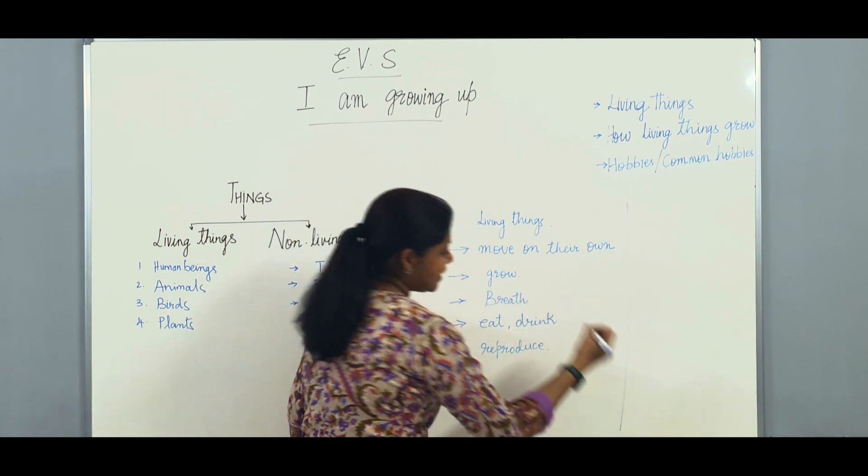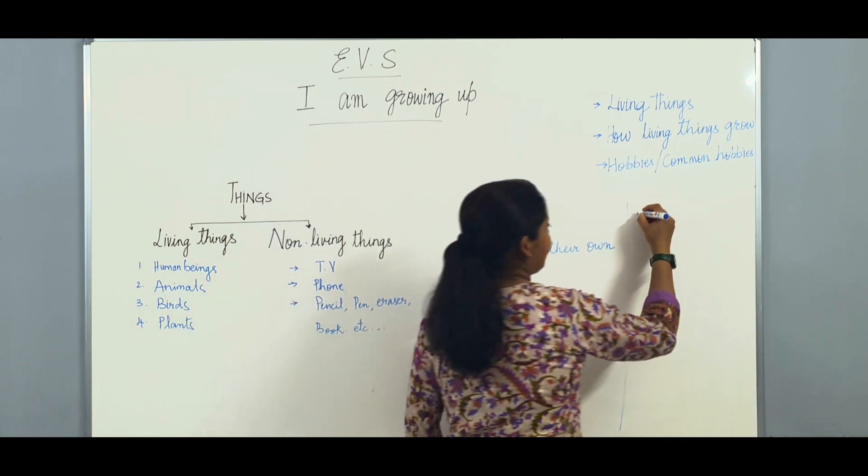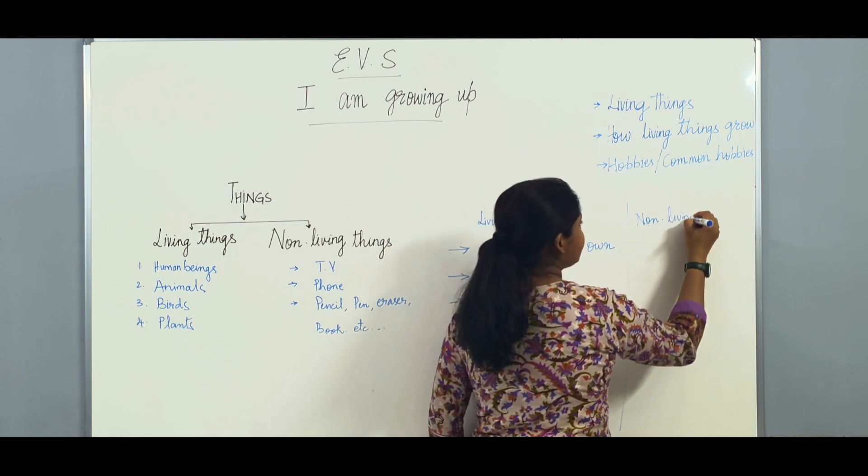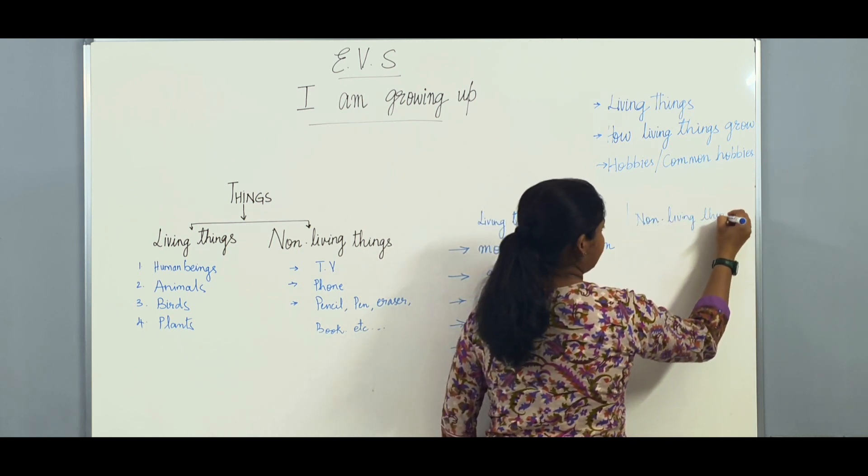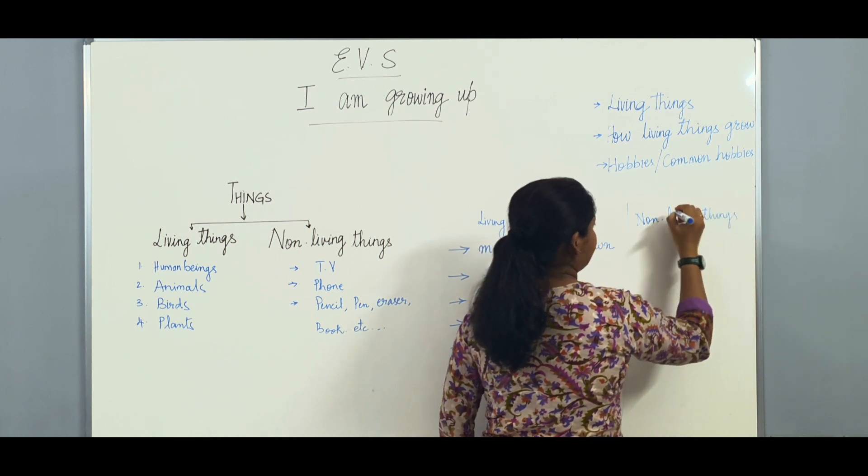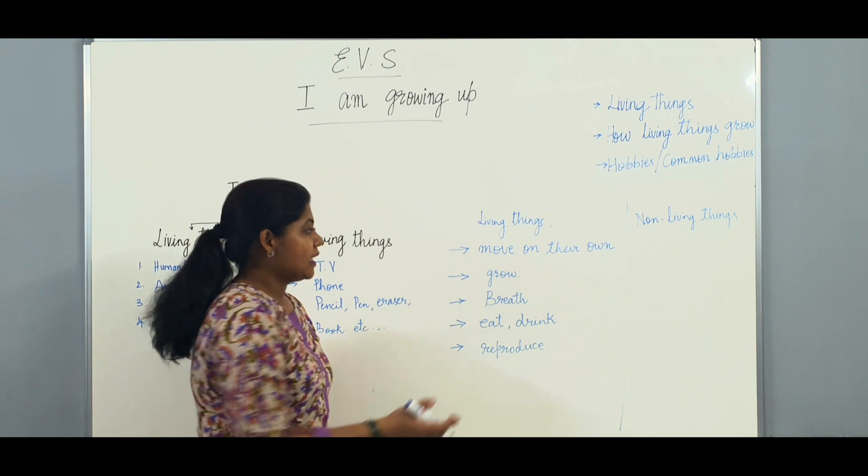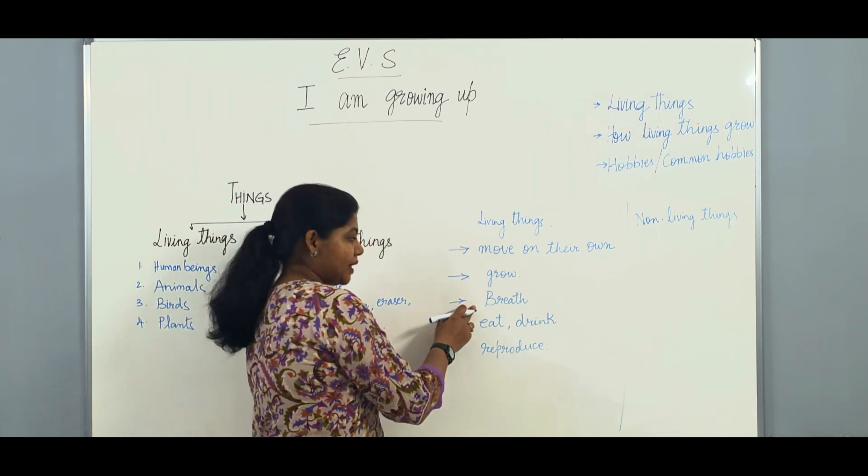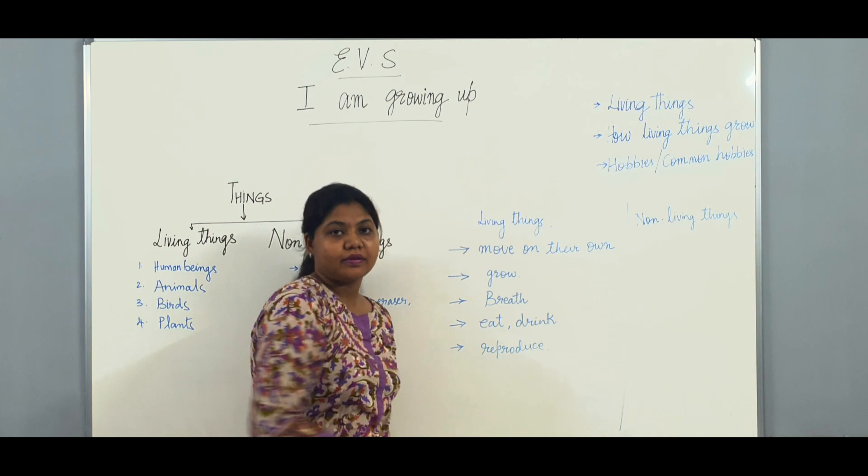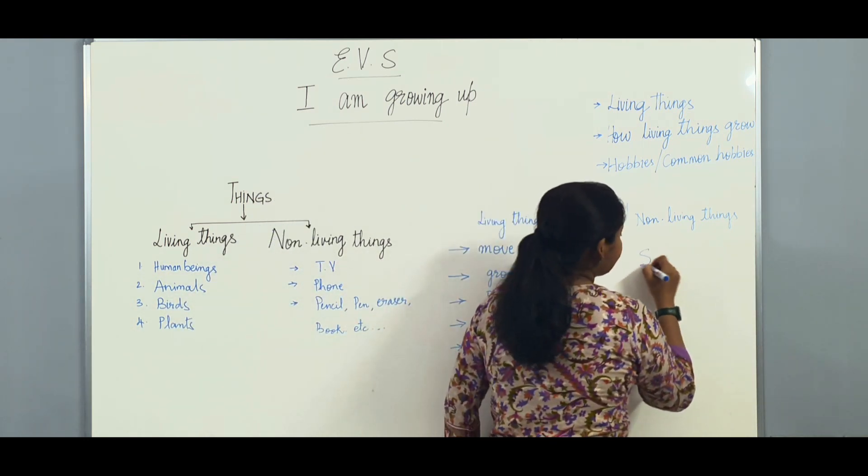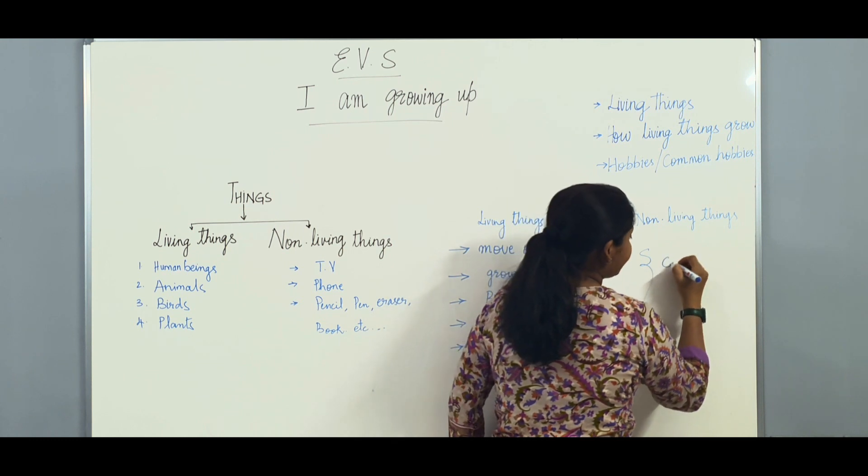And let us see non-living things. Non-living things - they do not move on their own. They cannot grow. Nor can they breathe. Nor they can eat or drink. Nor can they reproduce. So, they cannot do any of these.